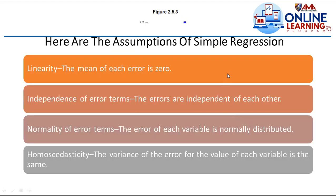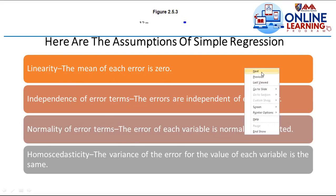Here are the assumptions of simple regression. Linearity: the mean of each error is zero. Independence of error terms: the errors are independent of each other. Normality of error terms: the error of each variable is normally distributed. Homoscedasticity: the variance of the error for each value of each variable is the same.